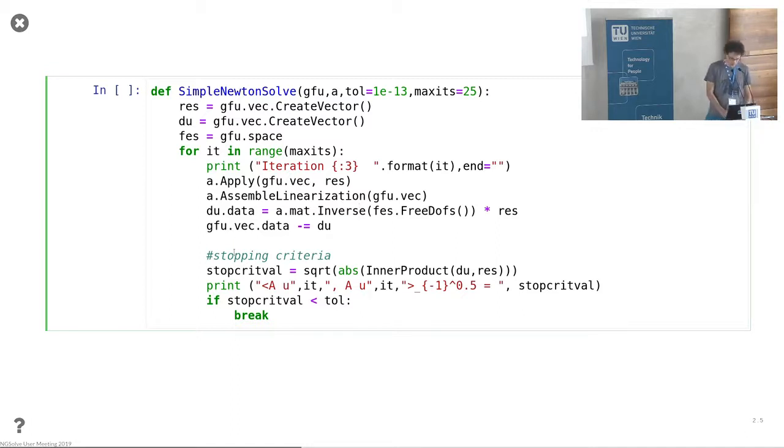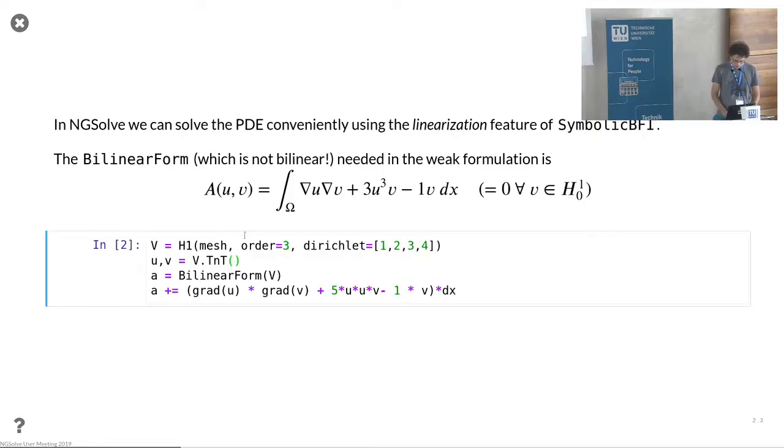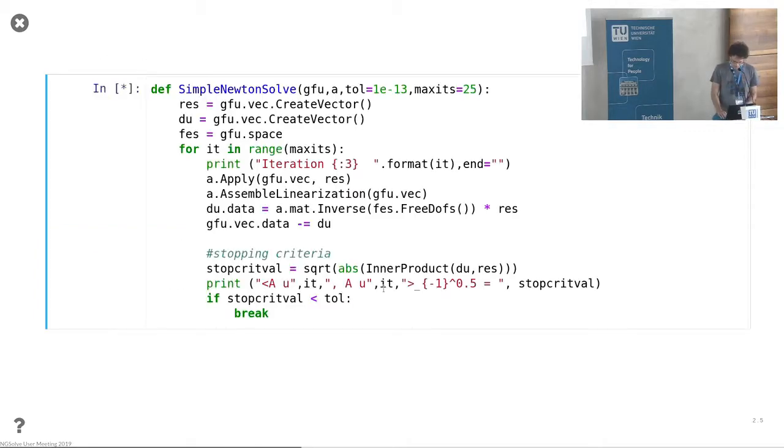So it's relatively simple. The key point is that we can do this assemble linearization where you don't have to do this by hand but this will happen automatically. It will essentially differentiate your expression that you have defined in your bilinear form here with respect to your argument u.